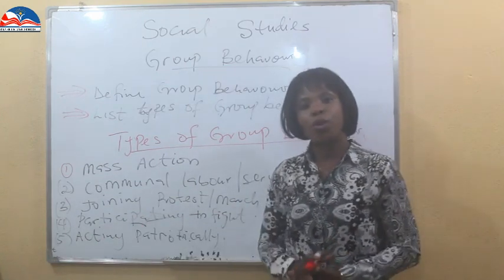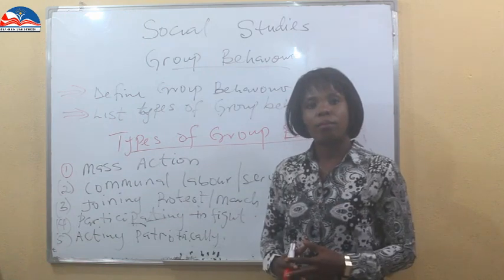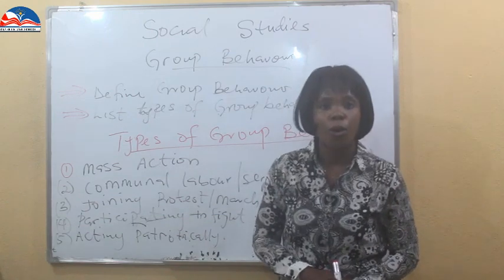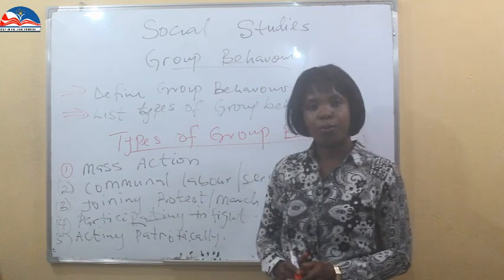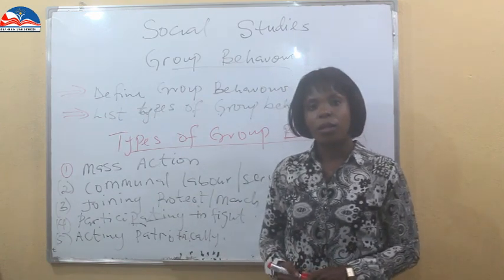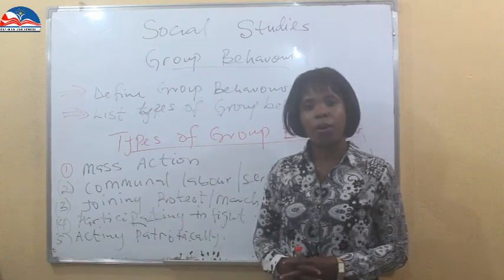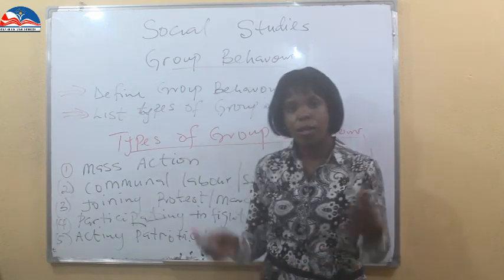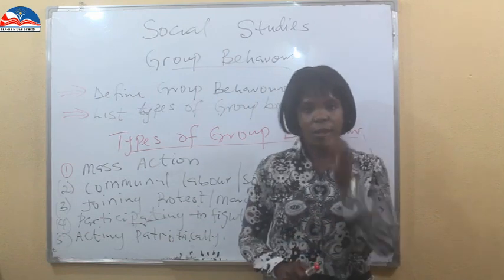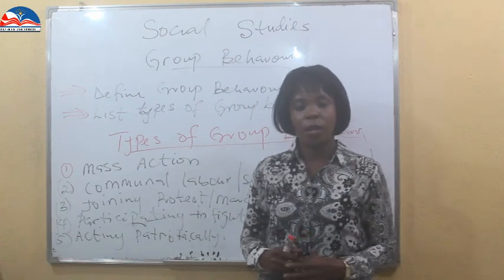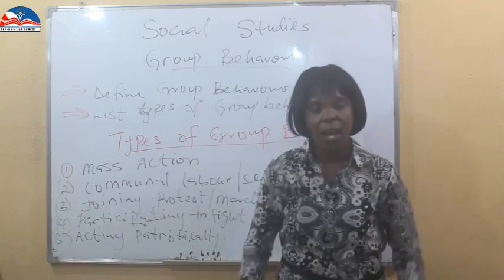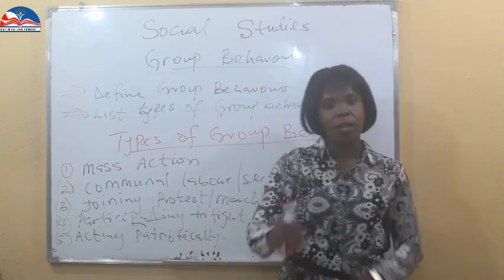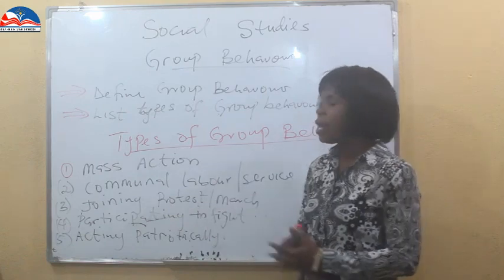When we talk about mass action, it is a group of people coming together and carrying out an action because they are not in favor — or they are in favor — of a particular issue. For example, a labor union, a collection of all laborers or government employees, carrying out an action because there is an increment in fuel, increment in electricity, or lack of basic life necessities. This group of people come together to carry out this purpose — this goal — to influence the government to change their attitude.